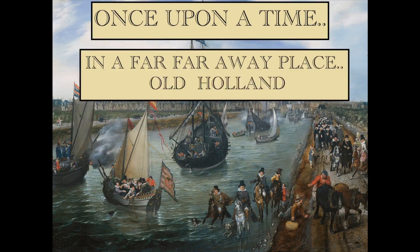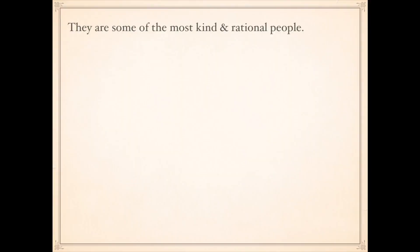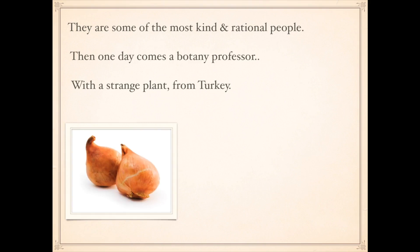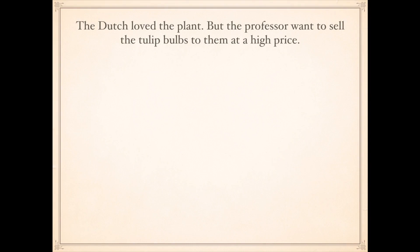Once upon a time, in a far, far away place — old Holland — lives a community of rich and happy citizens. They are some of the most kind and rational people in the world. Then one day comes a botany professor — that will screw them up — with a strange plant from Turkey. These plants, when they are a seed, they look like onion. But in fact, they are tulips — very beautiful flowers when they mature.